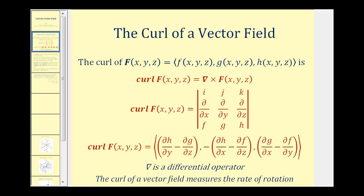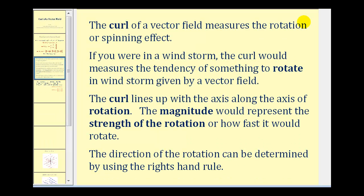The curl of a vector field measures the rotation or spinning effect of a vector field. If you were in a windstorm, the curl would measure the tendency of something to rotate given by that vector field. The curl aligns with the axis of rotation, and its magnitude represents the strength of the rotation — how fast it would rotate. The direction of rotation can be determined using the right-hand rule: if you point your right thumb in the direction the curl vector is pointing, as you close your right hand, your fingers close in the direction of rotation.